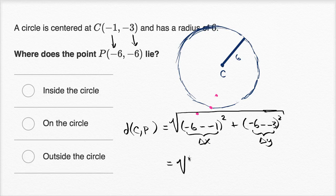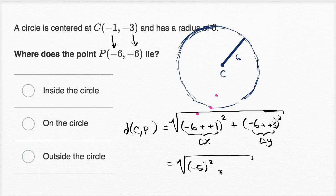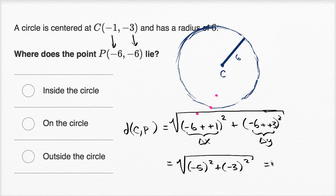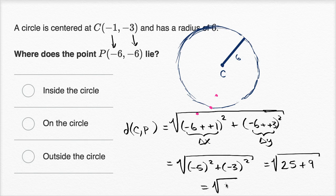This is equal to negative six plus positive one, which is negative five squared. And then negative six plus three is negative three squared. Our change in X is negative five — we go five lower in X — and our change in Y is negative three. So this is equal to the square root of 25 plus 9, which is equal to the square root of 34.